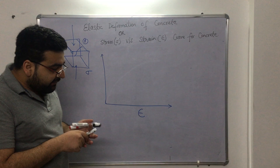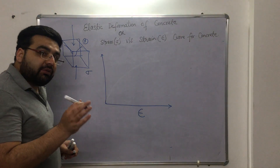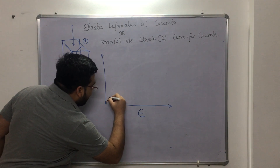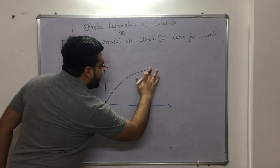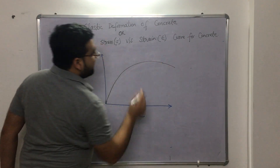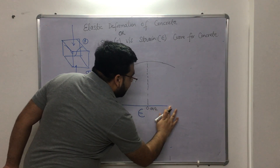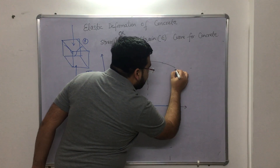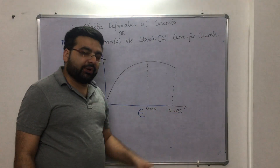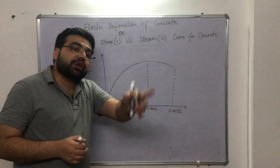First, I am going to draw the ideal curve — what type of curve you get if you perform the experiment in the lab. If you perform the experiment in the lab, you will get a curve that is initially a little bit straight, and after that it starts getting parabolic. Initially it is straight, then it becomes parabolic — extending like this. The strain at the parabolic transition is 0.002, and the strain at which it breaks is 0.0035. I will explain each of these values. This is the realistic curve — the actual curve you get in the laboratory.